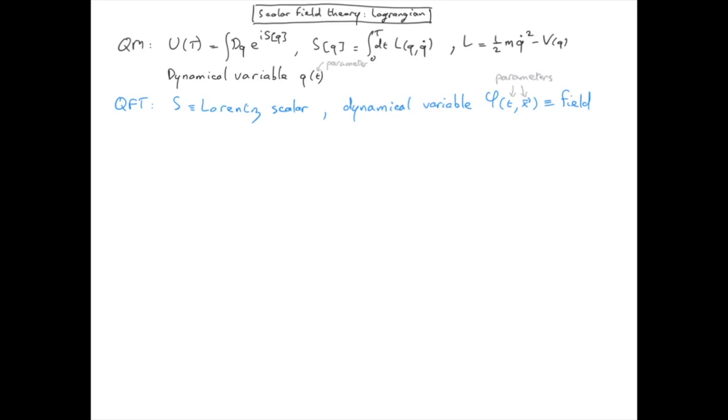So in quantum mechanics, we have only one dynamical variable, or one particle. Here we have an infinite number of dynamical variables, one per position x.